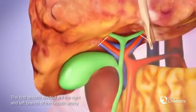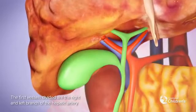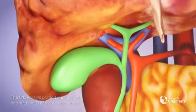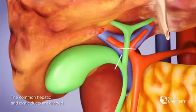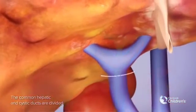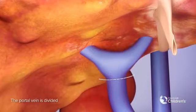We first divide the right and left branch of the hepatic artery. The common hepatic and cystic ducts are divided. The portal vein is divided.